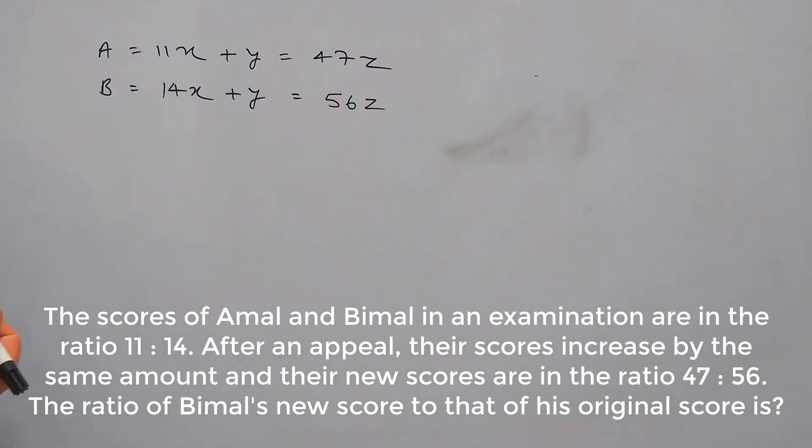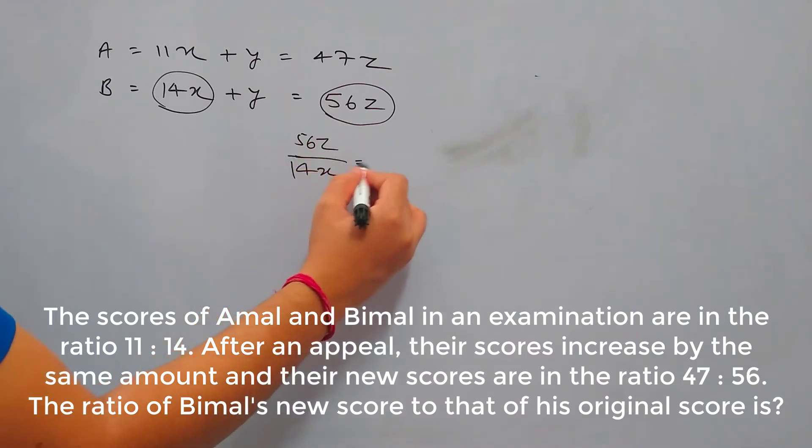The ratio of Bimal's new score to that of his original score is what we need to find out. So this is Bimal's new score and this is Bimal's original score. So we need to find out 56z by 14x.